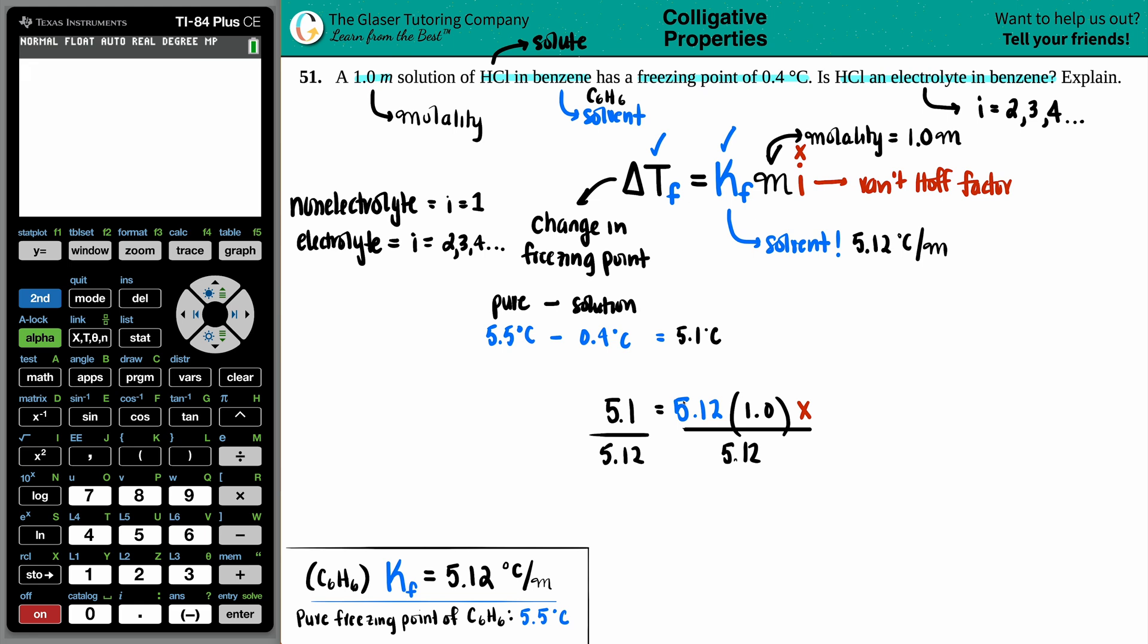Cancel that out. You probably can guess with sig figs what the number is going to be, but let's throw it into the calculator. Technically it should be two sig figs because that's basically what we only had here. So my i-value equals 1.0 if we rounded.